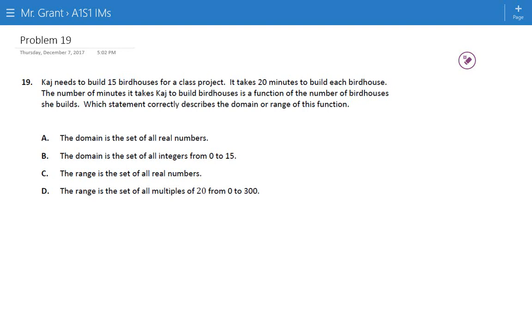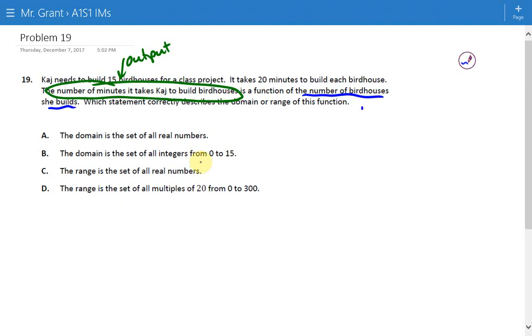The wording for the third sentence is a little tricky. It says the number of minutes it takes Kaj to build birdhouses is a function of the number of birdhouses she builds. So to me it sounds like the number of minutes it takes Kaj to build birdhouses is like an output. We're interested in how many minutes she's spent. And it's a function of the number of birdhouses which she's already built, and I think that's an input.